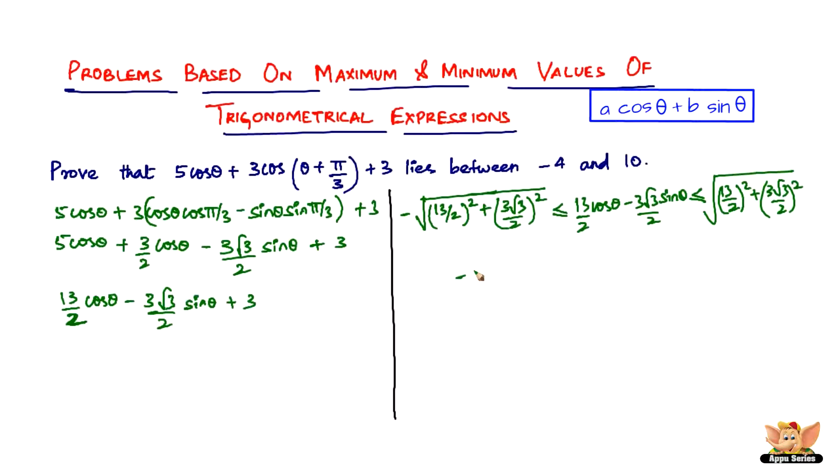The value of this one is minus 7, which is less than or equal to 13/2 cos θ minus 3√3/2 sin θ, which is lesser than or equal to plus 7 on this side.